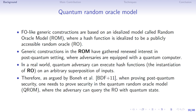The FO-like generic constructions are based on an idealized model called the random oracle model, where a hash function is idealized to be a publicly accessible random oracle. Generic constructions in the random oracle model have gathered renewed interest in the post-quantum setting, because a quantum adversary can execute a hash function on arbitrary superpositions of inputs. Therefore, when proving post-quantum security, one needs to prove security in the quantum random oracle model, where the adversary can query the random oracle with a quantum state.